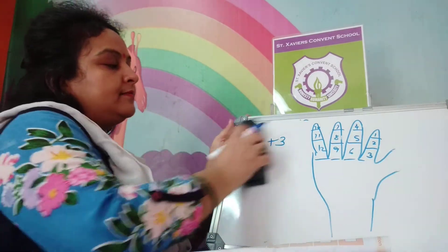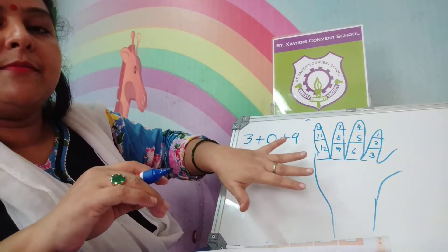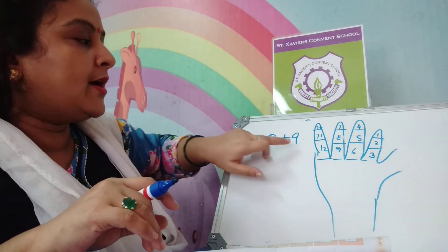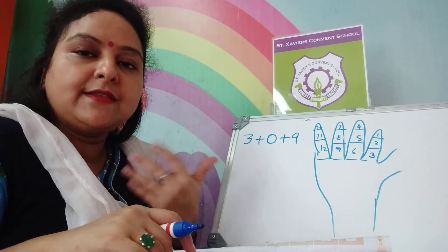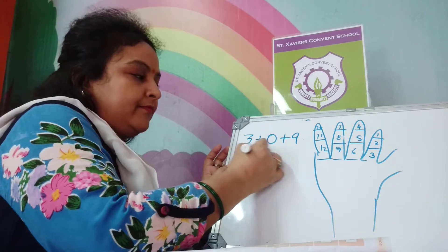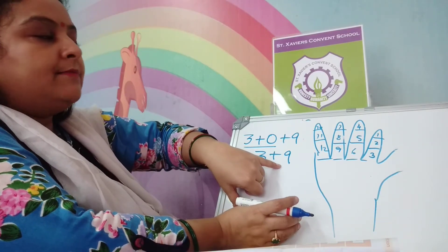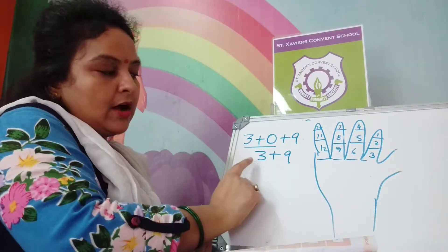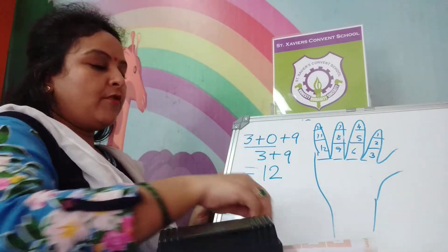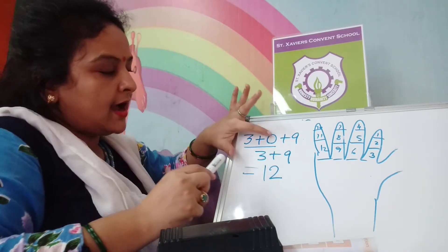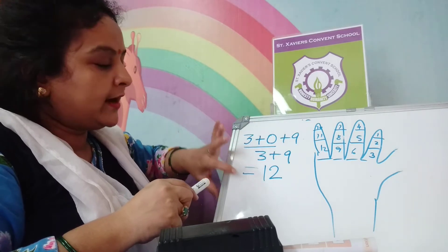Another addition: 3 plus 0 plus 9. When we add 0 with any number, the answer will remain the same. So 3 plus 0 is 3, then 3 plus 9. The bigger number is 9, count up to 3: after 9 comes 10, 11, 12. The answer will be 12. First add the first two numbers, get that answer, then add the remaining number to get the whole answer.